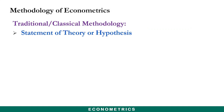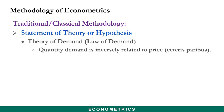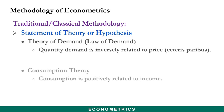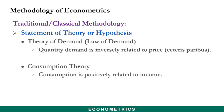We begin with the traditional or classical methodology of econometrics. The first step is the statement of theory or hypothesis. You are familiar with the law of demand, which states that quantity demanded is negatively related to price — ceteris paribus, meaning all other factors held constant. We also have consumption theory, which states that consumption is positively related to income.